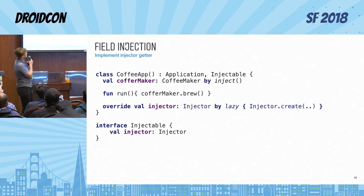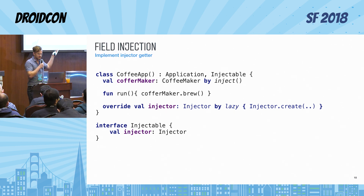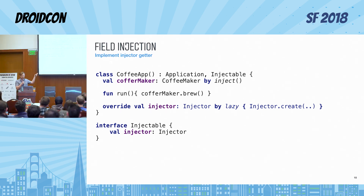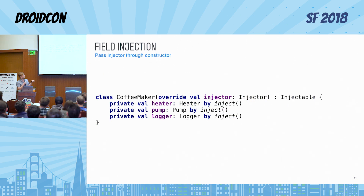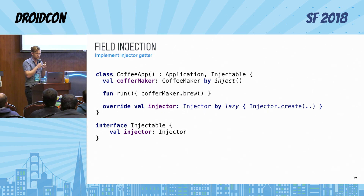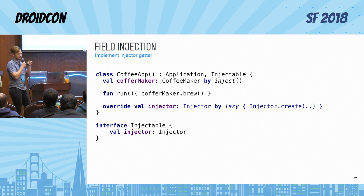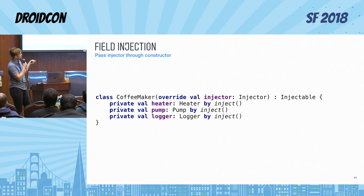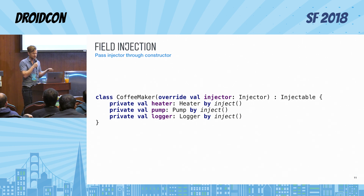One important detail is that any class that uses the injector will have to implement an interface called Injectable, which is simply a getter that returns you an instance of injector. At the root of your application you usually need to create that injector, and later on you can pass it automatically to different classes that you inject into.